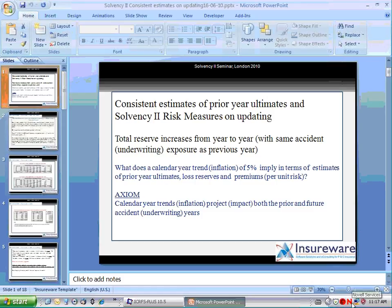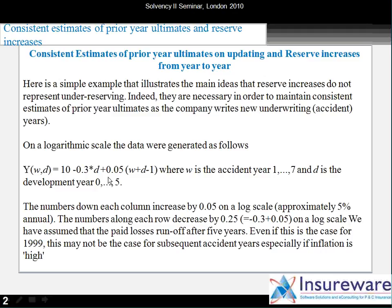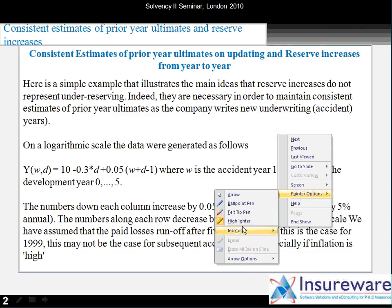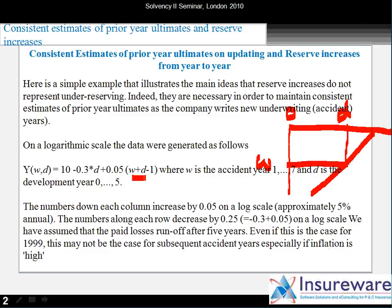Let's look at a simple study where I've done a simple simulation. We create some data which has no process variability — it's essentially deterministic — and this data is based on a particular equation on the logarithmic scale. W represents the accident year, D is the development year. The calendar year is W plus D minus 1, starting from development year 0. On the logarithmic scale there's a level of 10, a decay of 30%, and a calendar year trend of 5%, which is constant.